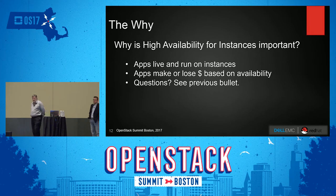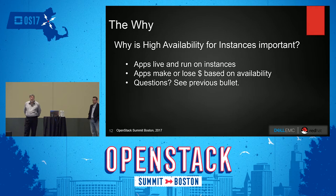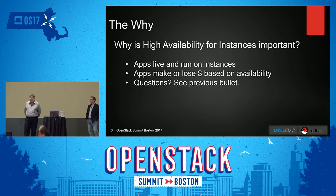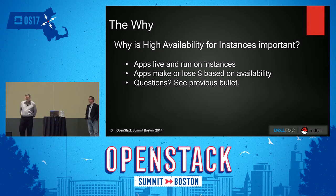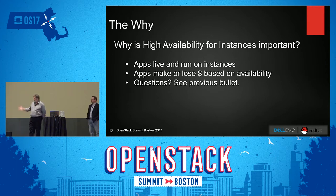The reason we need high availability is because our apps live in instances. Some of these apps may be routing software for trucks, like Cisco Foods has. If one of these apps goes down, Cisco Foods loses roughly half a million dollars a minute. The big reason we need this is for making dollars — we don't want to lose dollars. We want our applications up all the time.